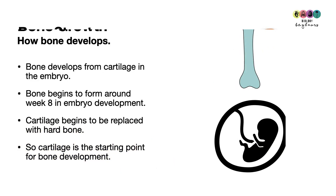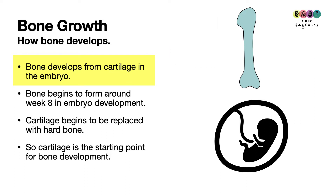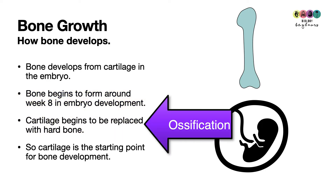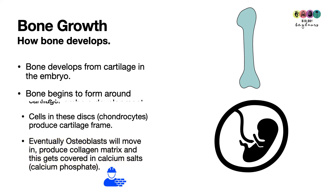So how does bone develop in a human? Bone develops from cartilage in the embryo, and bone development generally begins around week eight of embryo development. At this stage, the cartilage begins to be replaced with hard bone — this is called ossification. Cartilage is always the starting point for bone development.